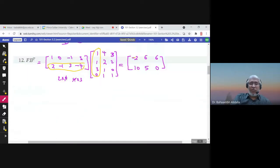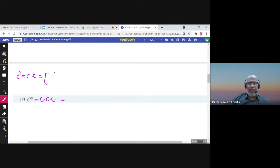What is C? 5, 3, 1, 2. This will give you C squared. 5 times 5 plus 3 times 1, that's 28. 5 times 3 plus 3 times 2, that's 21. 5 plus 2, 3 plus 4. So this is C squared.